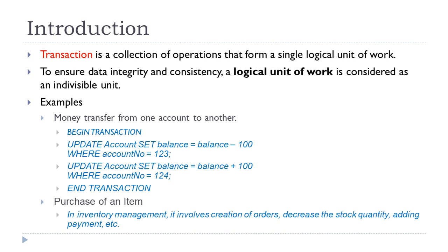See these examples here. The first one is about transferring money from one account to another. The second is about purchasing of an item. These two transactions involve multiple instructions, multiple operations. In the first case it involves two update statements. When you transfer money from one account to another, you have to execute two update statements: deducting the amount in one account and adding the amount into another account.